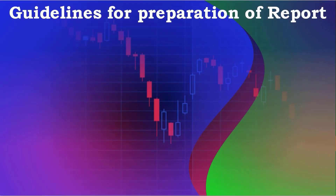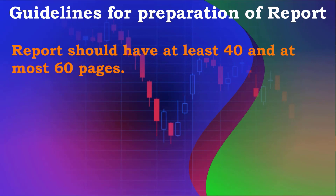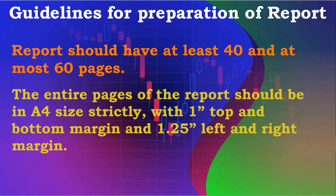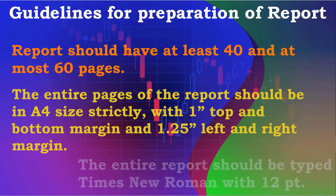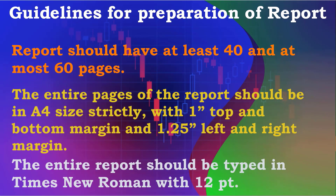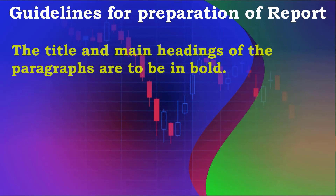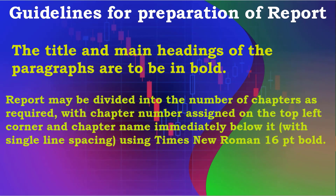Guidelines for preparation of report. Number 1: Report should have at least 40 and at most 60 pages. Number 2: The entire pages of the report should be in A4 size strictly, with 1 inch top and bottom margin and 1.25 inches left and right margin. Number 3: The entire report should be typed in Times New Roman with 12 point. Number 4: The title and main headings of the paragraphs are to be in bold. Number 5: Report may be divided into the number of chapters as required, with chapter number assigned on the top left corner and chapter name immediately below it, with single line spacing, using Times New Roman 16 point bold.